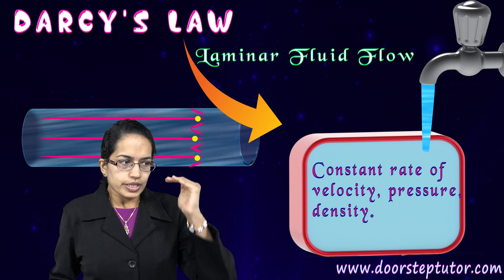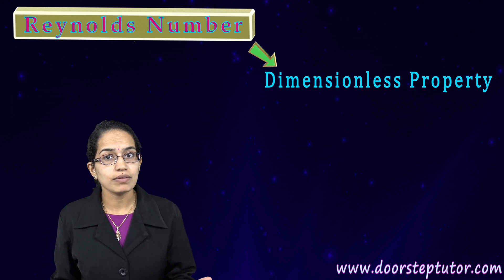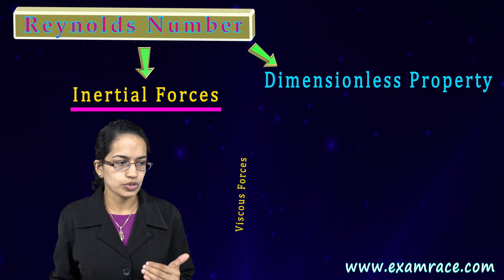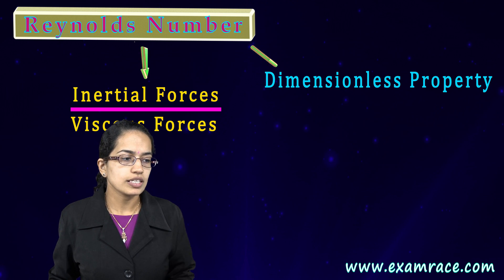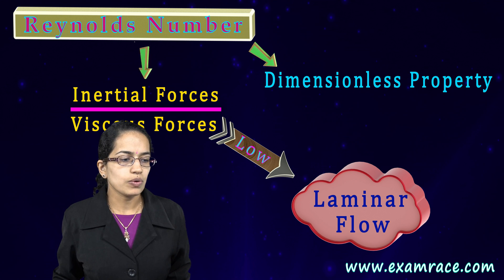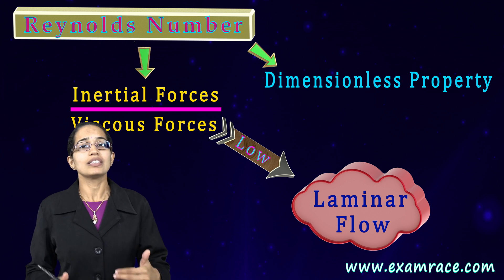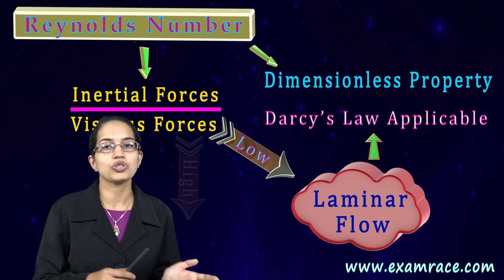There is another important thing we need to understand: the Reynolds number. Reynolds number is a dimensionless property — it is the ratio of inertia to the viscous forces. When this ratio is low, we say that there is a laminar flow and Darcy's law would be applicable. However, if this ratio is high, then it would be considered a turbulent flow.